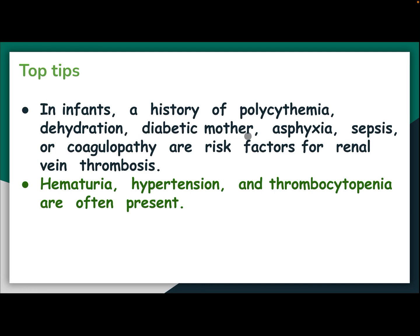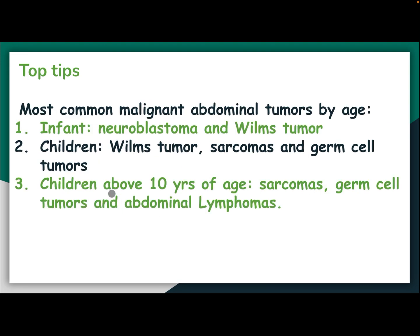In infants, a history of polycythemia, dehydration, diabetic mother, asphyxia, sepsis, or coagulopathy are risk factors for renal vein thrombosis. Hematuria, hypertension, and thrombocytopenia are often present.